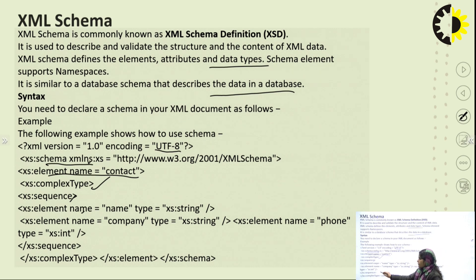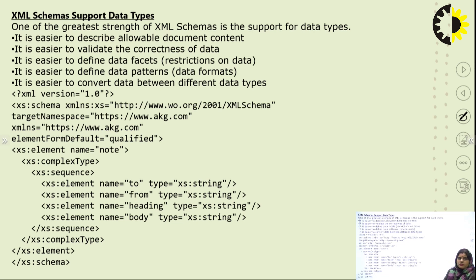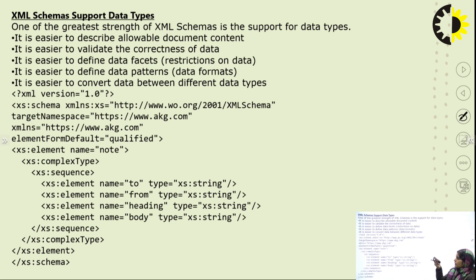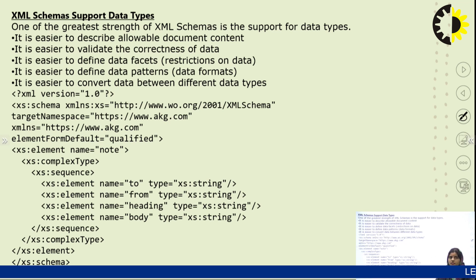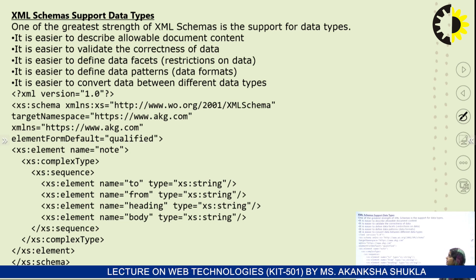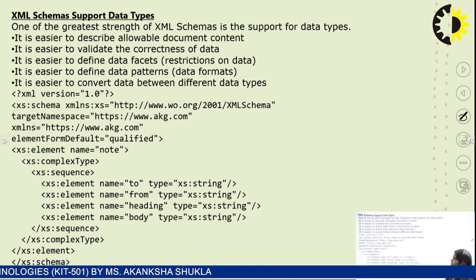After that, close the further text tags correspondingly. XML Schema supports data types, making it easier to describe allowable document content and validate data correctness. It is easier to define data facets — restrictions on data — as well as data patterns and formats. It also makes it easier to convert data between different data types.